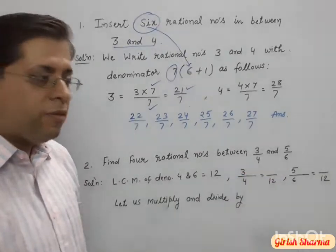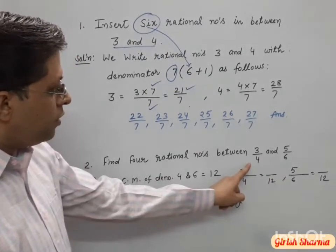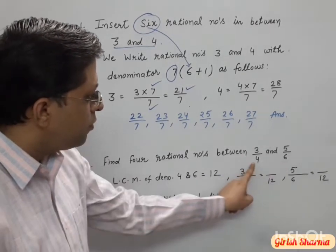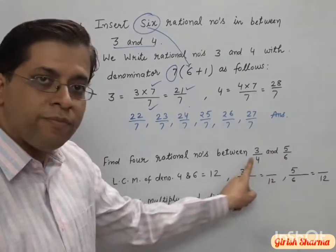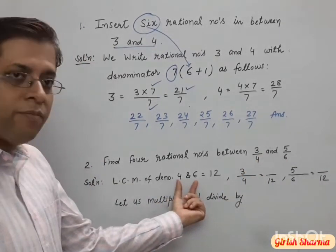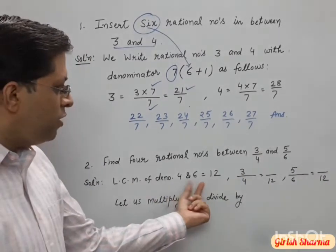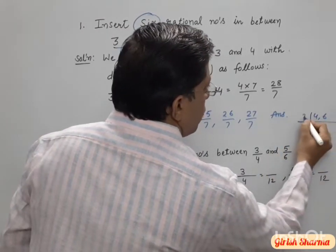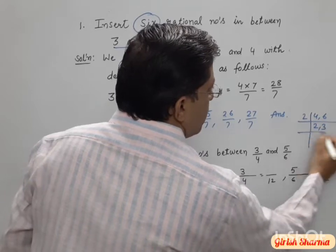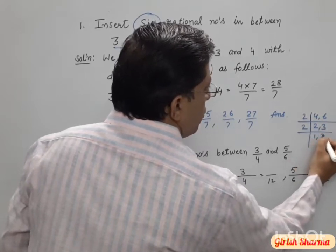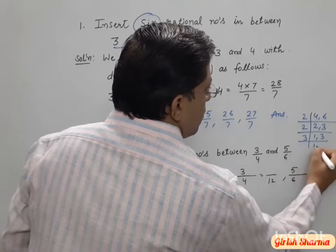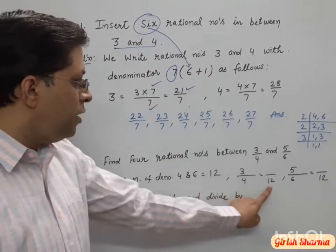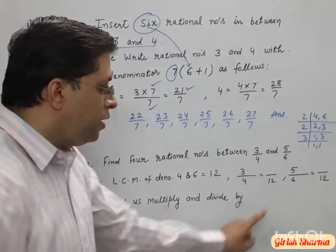When fractions are given with different denominators, we have to take the LCM. The LCM of 4 and 6: we divide by 2 — 4 and 6 become 2 and 3; multiply gives us 12. So the LCM of 4 and 6 is 12.